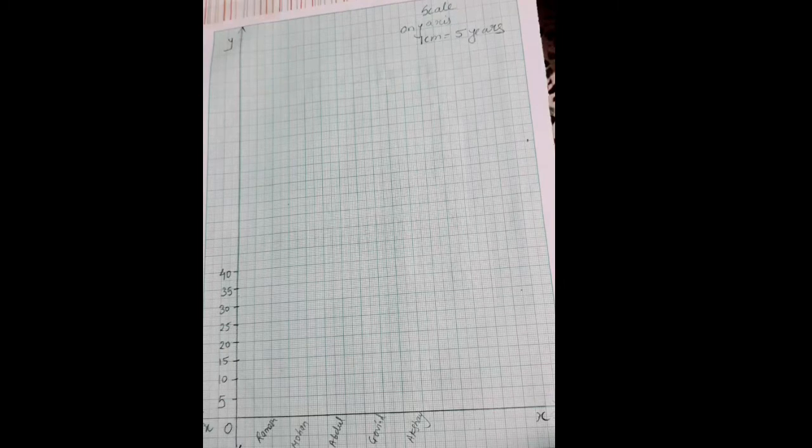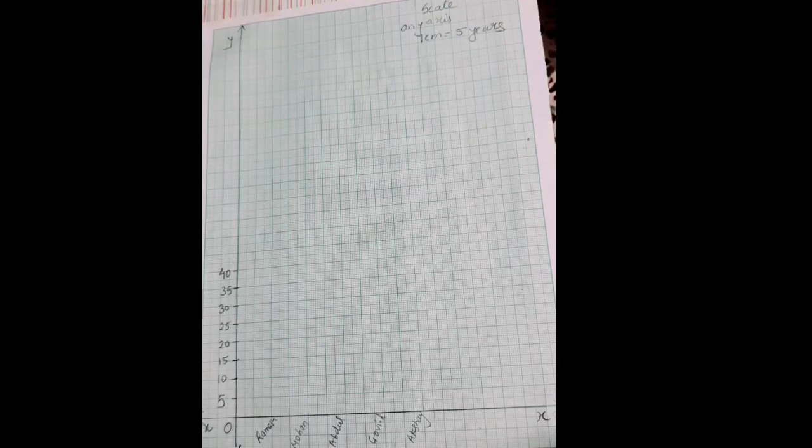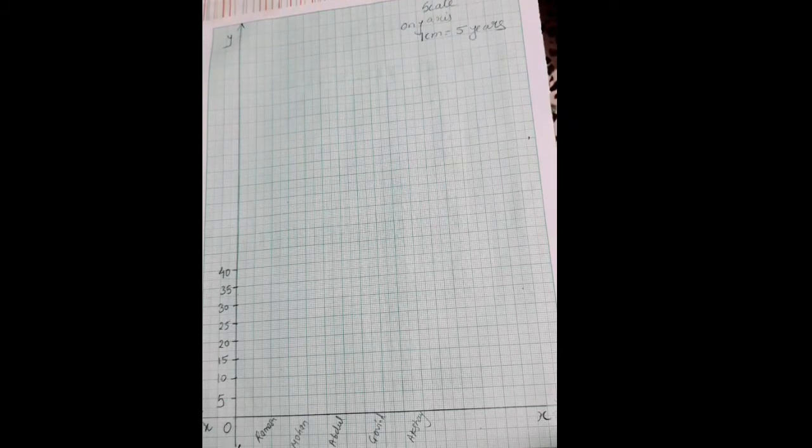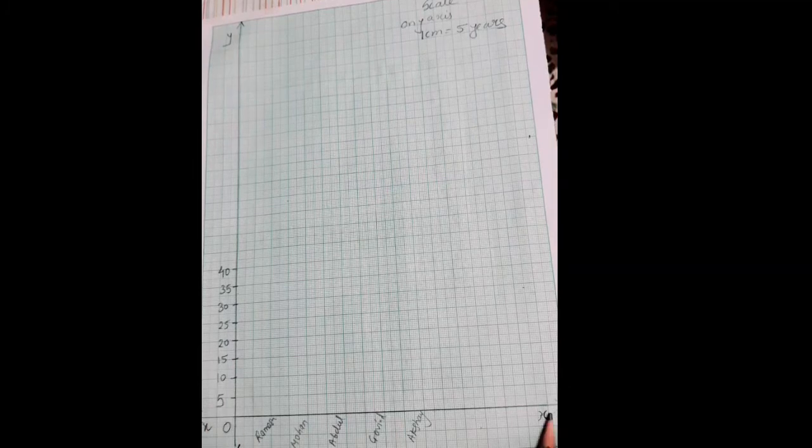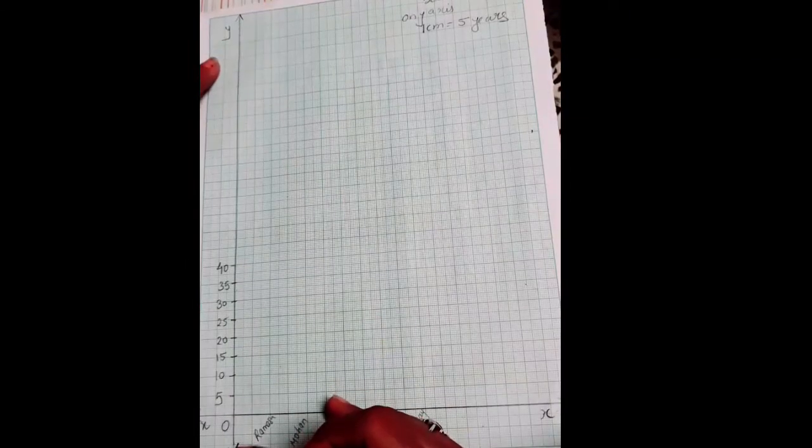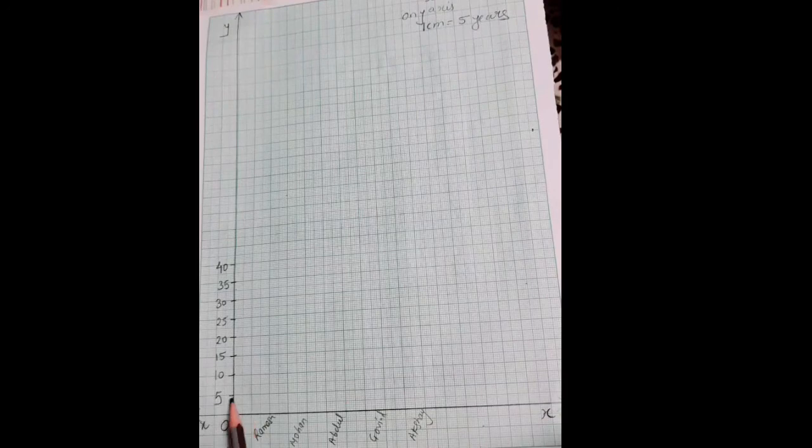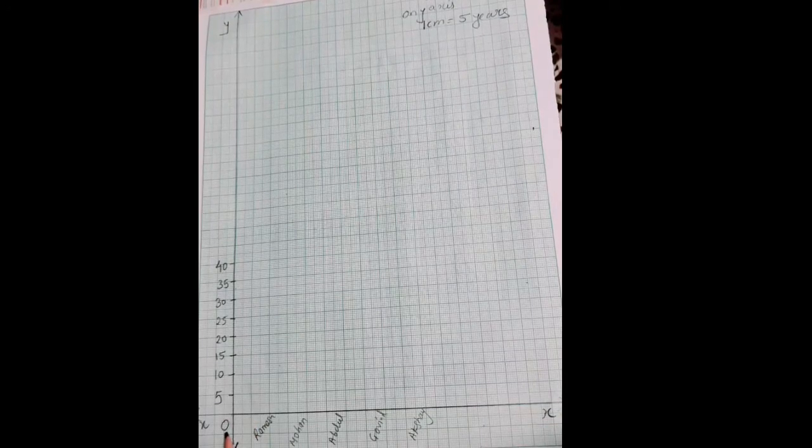I will start for making a graph. Making a graph we have to draw a horizontal line. It's called x axis. Vertical line is called y axis. Intersection of x axis and y axis is origin 0.